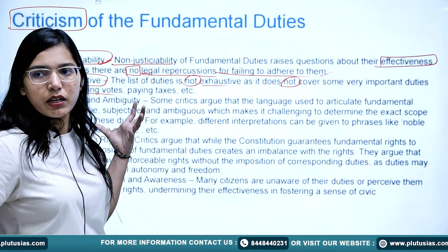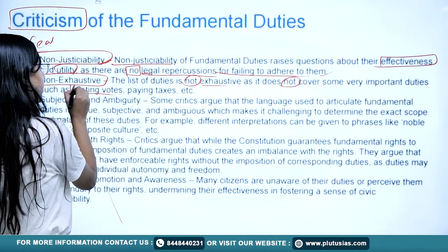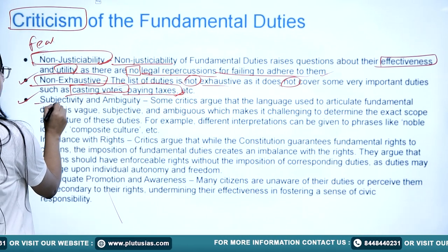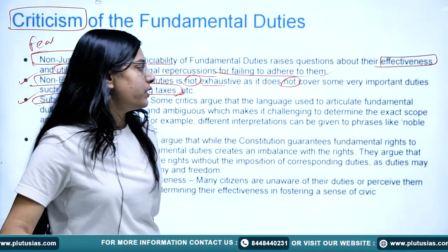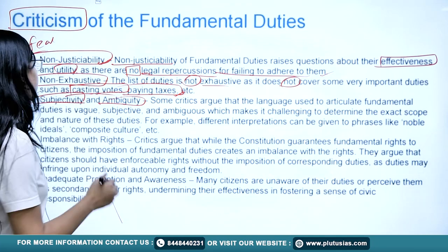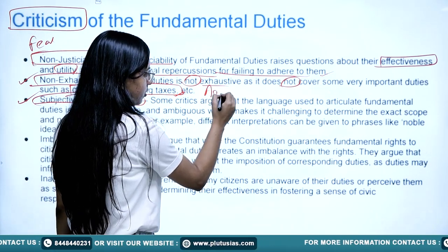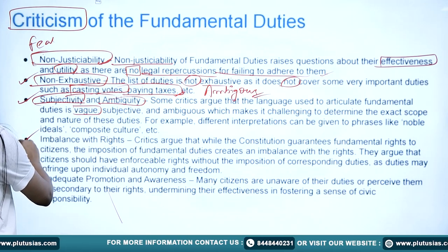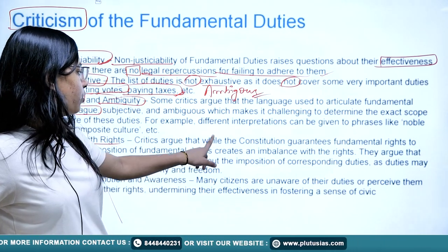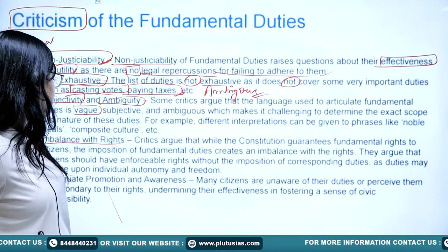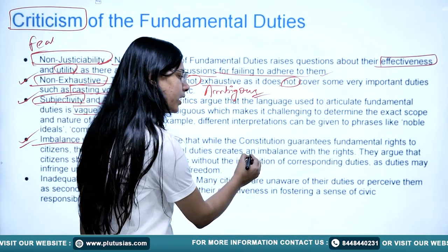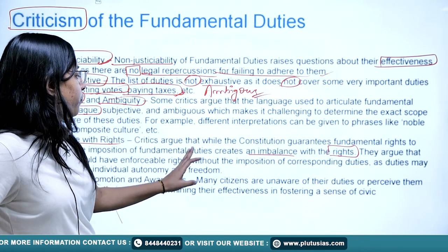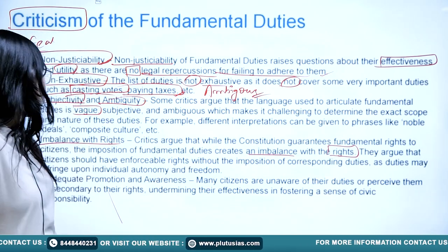The fundamental duties are not complete — duties like casting votes and paying taxes are not mentioned here. The third criticism is subjectivity and ambiguity: some critics argue that the language used to articulate fundamental duties is vague. The fourth criticism is imbalance with rights — critics argue that the imposition of fundamental duties creates an imbalance with the fundamental rights guaranteed to citizens.